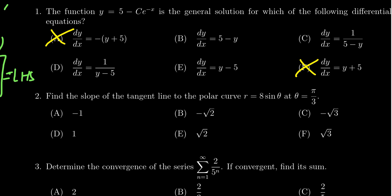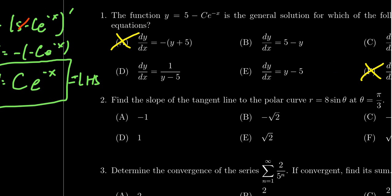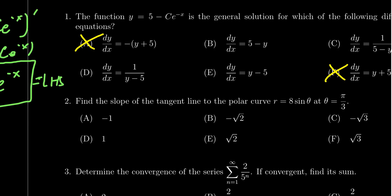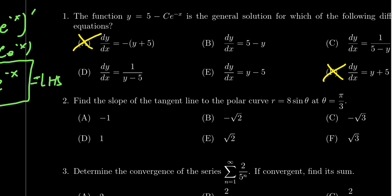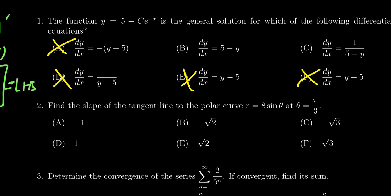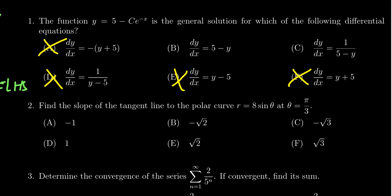We're going to have to have some type of subtraction. But then the other thing to pay attention to is that we need to have a positive c e to the negative x. Y starts off with a negative. So we have to somehow turn that negative into a positive. That is, we have to be subtracting a y of some kind. So we have to subtract from 5 the y. Option d wouldn't work and option e wouldn't work because we need to subtract the y from the 5. That narrows it down just to choice b and c.